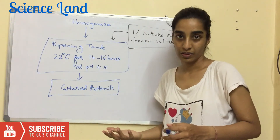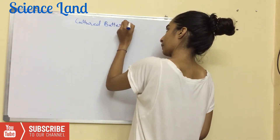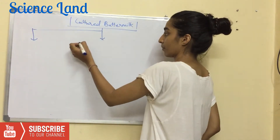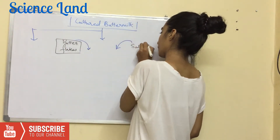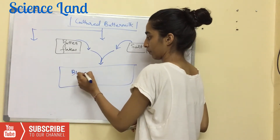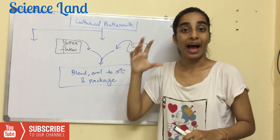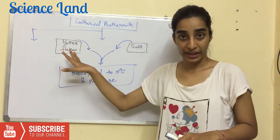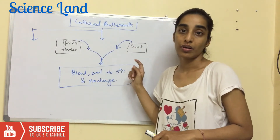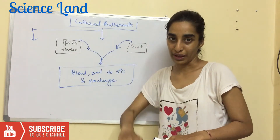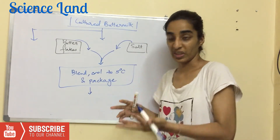After the product is made, there are two steps. We have the cultured buttermilk; we add the butter flakes and salt, blend it properly, cool it from 22°C to 5°C, and package it. It is then stored for three to four weeks.